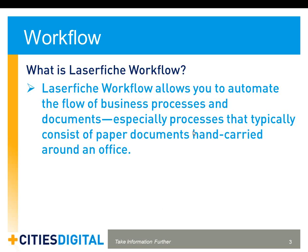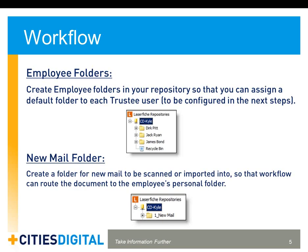With security, I can hide each one of these employee folders so that only the employee and the admin can see them — it will be pretty transparent for the end user. In this example, I've created three employee folders: one for Derek Pitt, one for Jack Ryan, and one for James Bond — all fictional characters. There's also another folder called 'one underscore new mail,' which is the incoming scans folder where I'll put my scanned mail. The workflow will monitor that folder, grab the document, and route it to the employee's own folder.